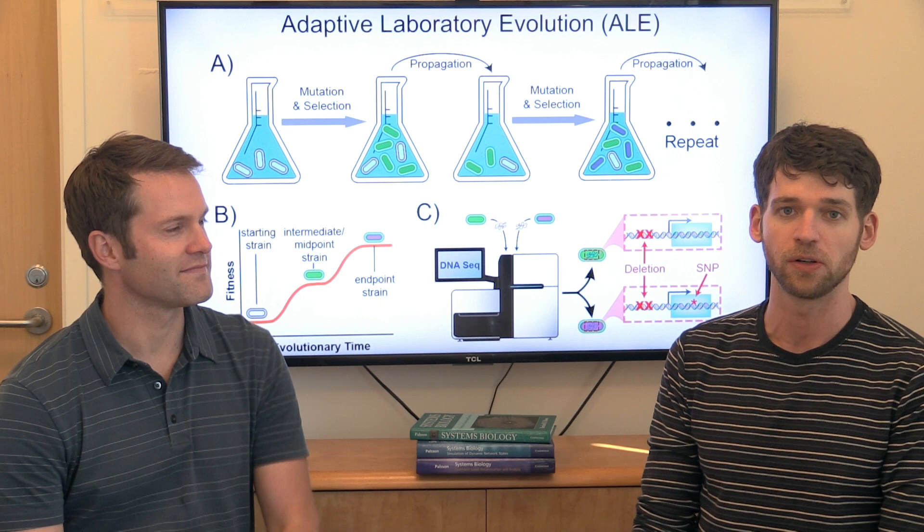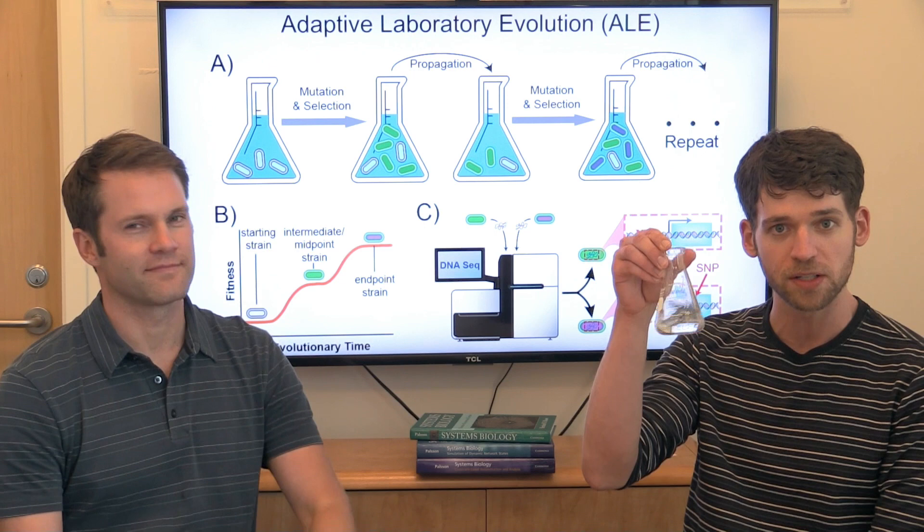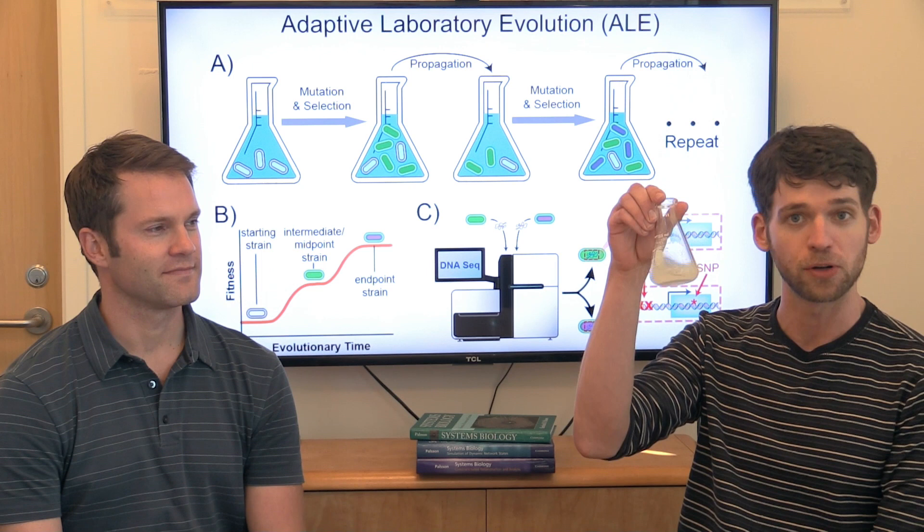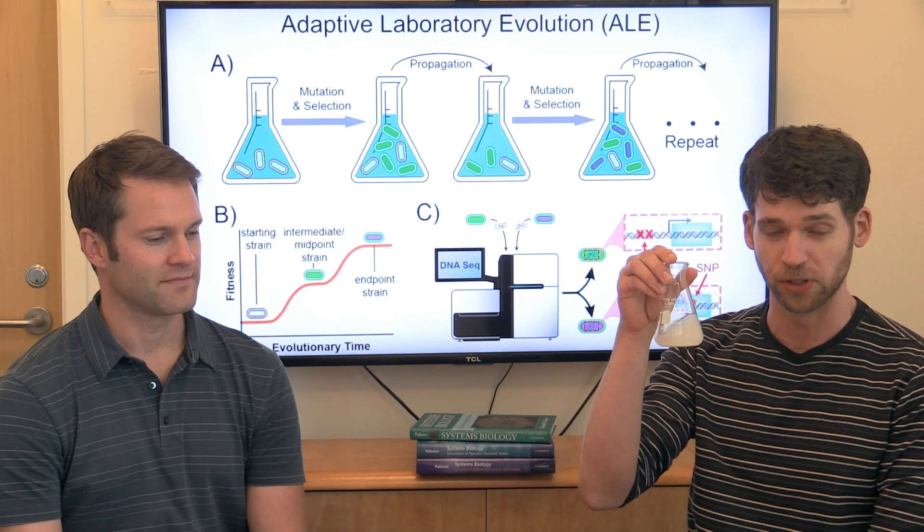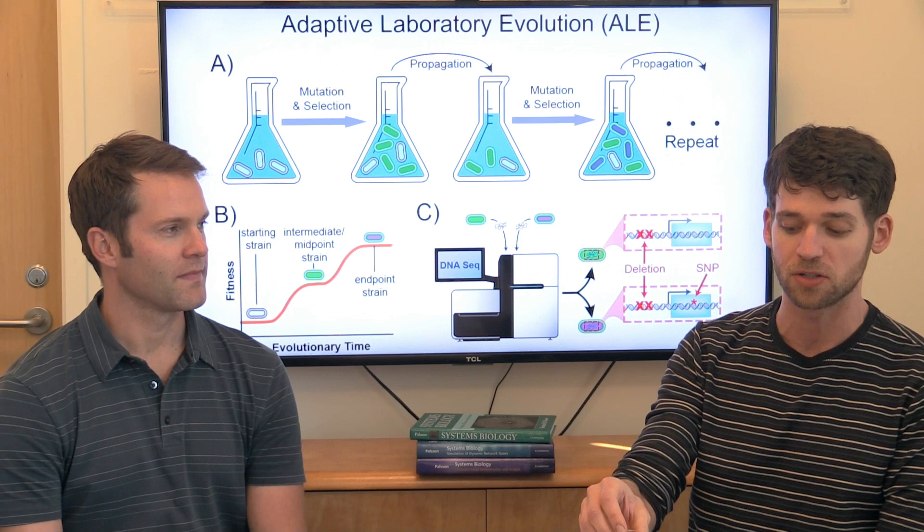So you start off with just a tube of nutrients that the microbes can grow on and then as they grow the culture gets dense because now there are trillions of cells in here. ALE works really well in microbes because you can get trillions of cells in a tiny little flask, they rapidly divide, they accumulate mutations, and so essentially what this is doing is performing a calculation that our best supercomputers could not possibly do